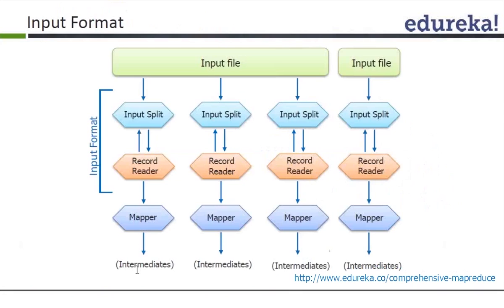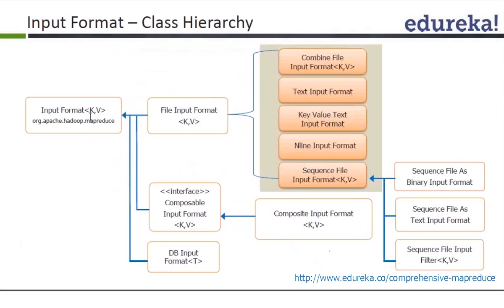We already know that TextInputFormat uses new line as the delimiter. The input file is split into input splits; a record is a line. The RecordReader class converts each line into a key-value pair — the byte offset as the key and the line content as the value — which then goes to the mapper. The intermediate files are stored as mapper output in the local directory on the node.